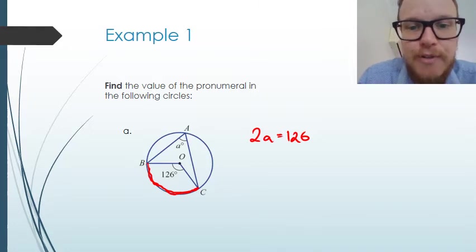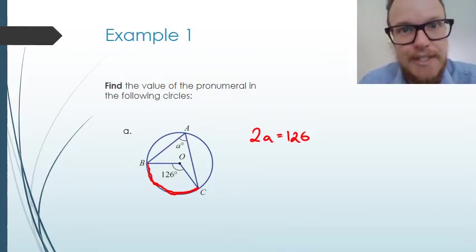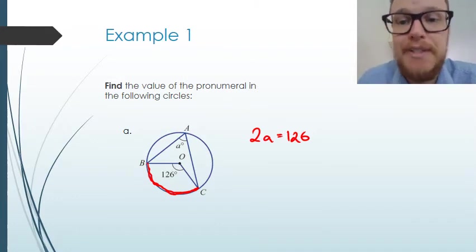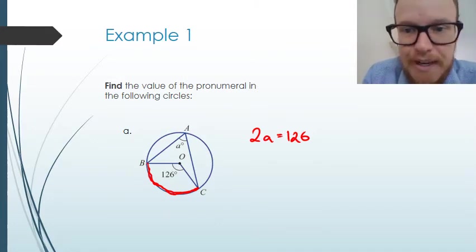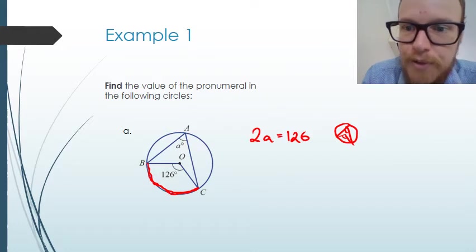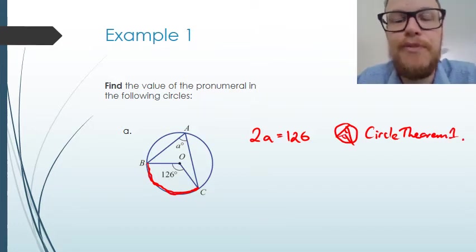We need a coded reason — we can't just make an assertion without evidence. The evidence is theorem 1 (or circle theorem 1). So we state our fact and give the evidence.